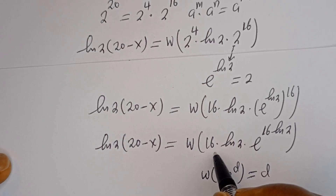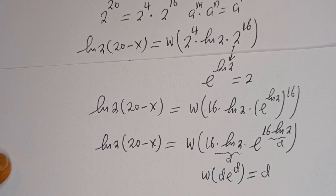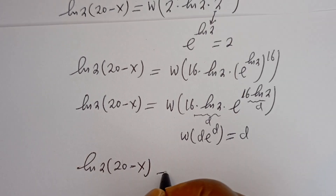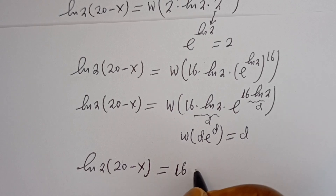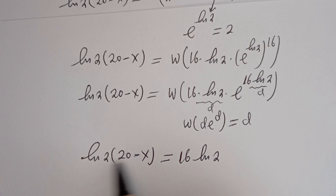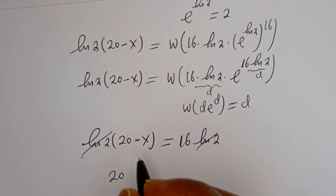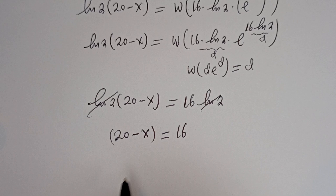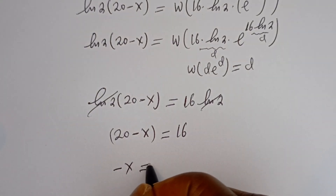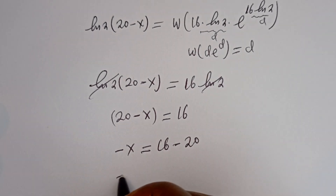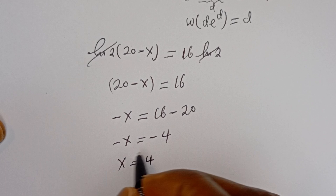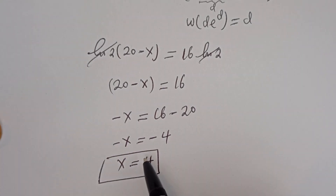Now applying the W function: here d equals 16 ln 2 and the exponent is also 16 ln 2, so W(d · e^d) = d. Therefore ln 2 multiplied by (20 minus x) equals 16 ln 2. Dividing both sides by ln 2, we get 20 minus x equals 16. Then minus x equals 16 minus 20, so minus x equals minus 4, giving x equals 4. This is the final answer. Let's check: substituting x equals 4 into 2 to the power of x plus x equals 20, we get 2 to the power of 4 plus 4 equals 16 plus 4 equals 20, which is true.